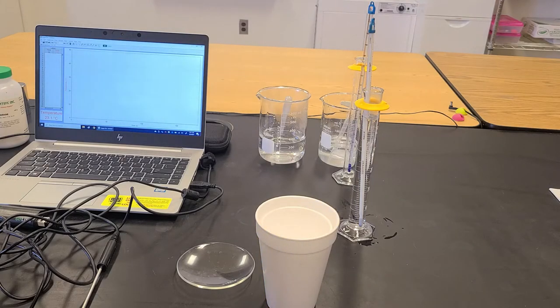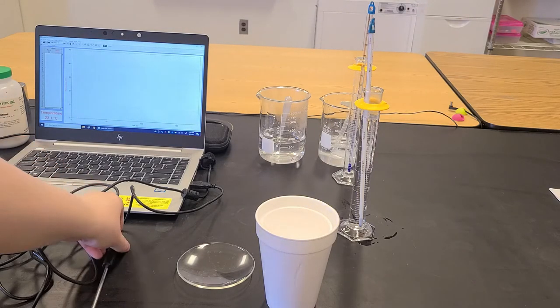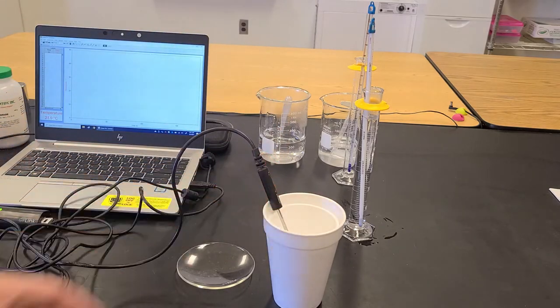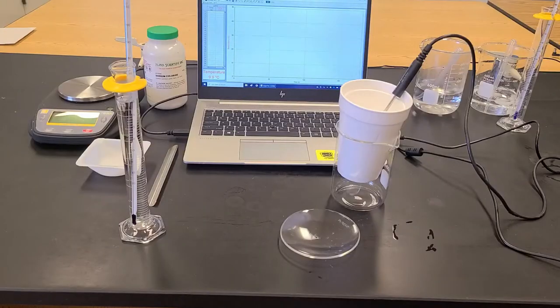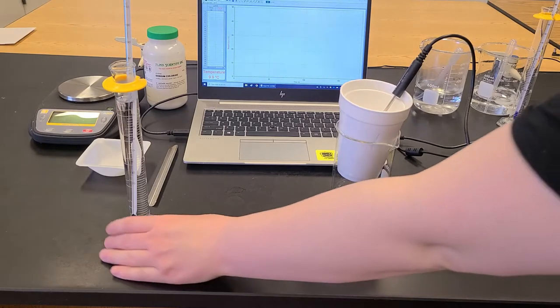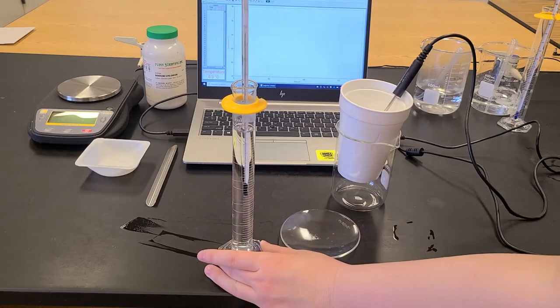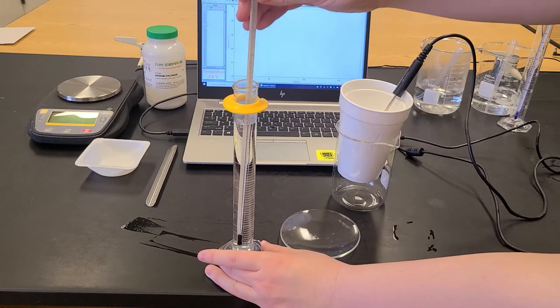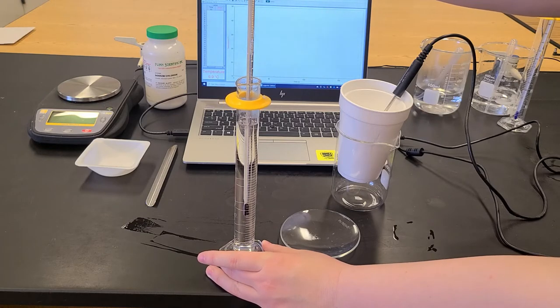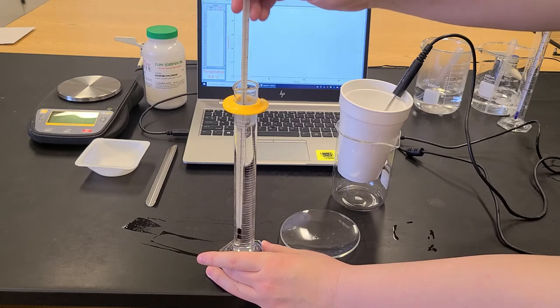So next I'm going to take the probe here and place it in my calorimeter. And I'm going to add this hot water while I mix with the temperature probe here so that I can get the final temperature of the hot and cold water mixed together.